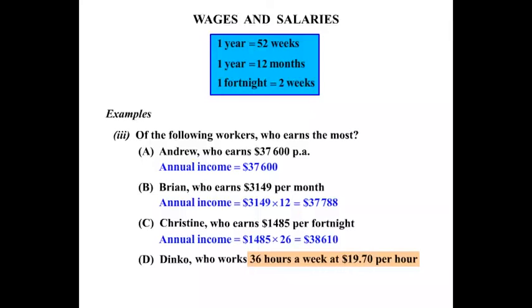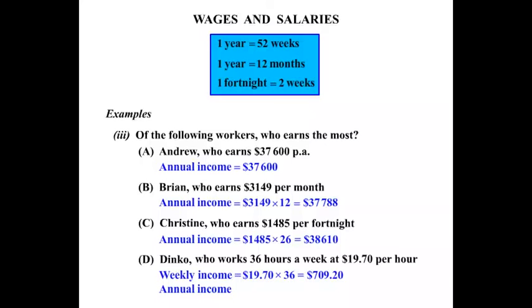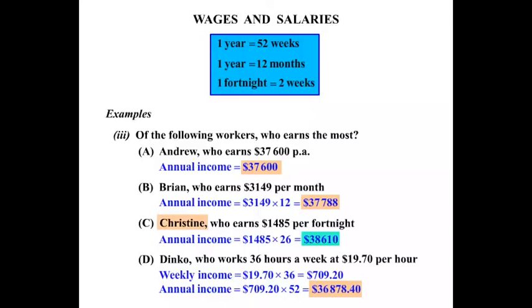Finally, Dinko. We still need to work out something before we can get to the annual income. He's working 36 hours a week at $19.70 per hour, so the weekly income is $19.70 times 36, which works out to be $709.20. The annual income is that weekly income multiplied by 52 weeks, giving $36,878.40. Now that we have all four annual incomes, we can compare them, and we can see that Christine comes out on top at $38,610. Christine is the answer to the question.